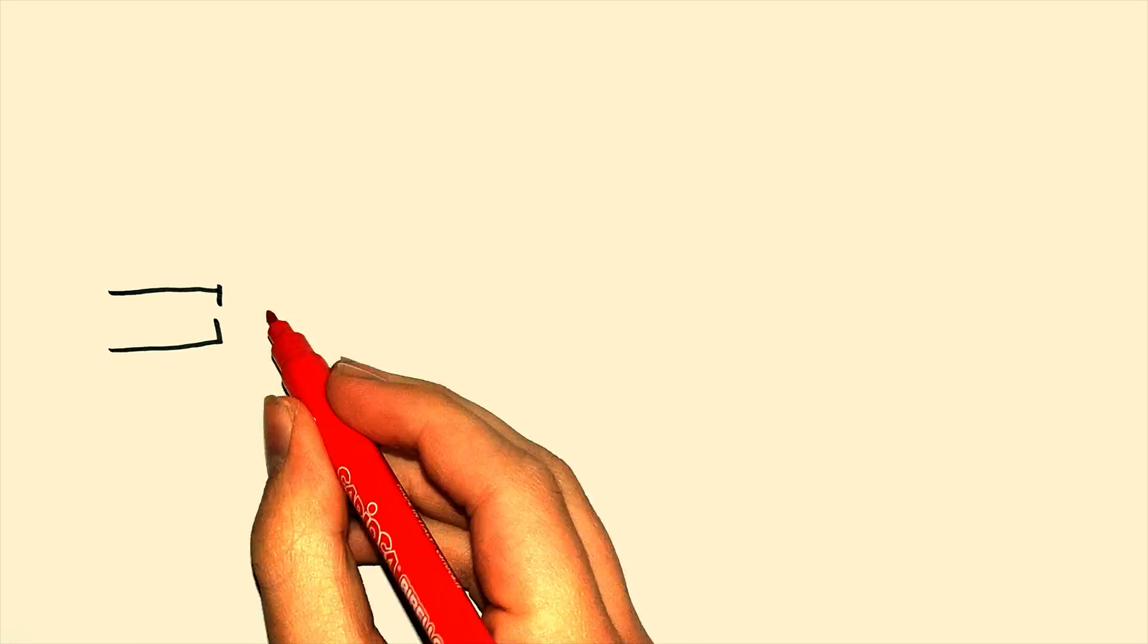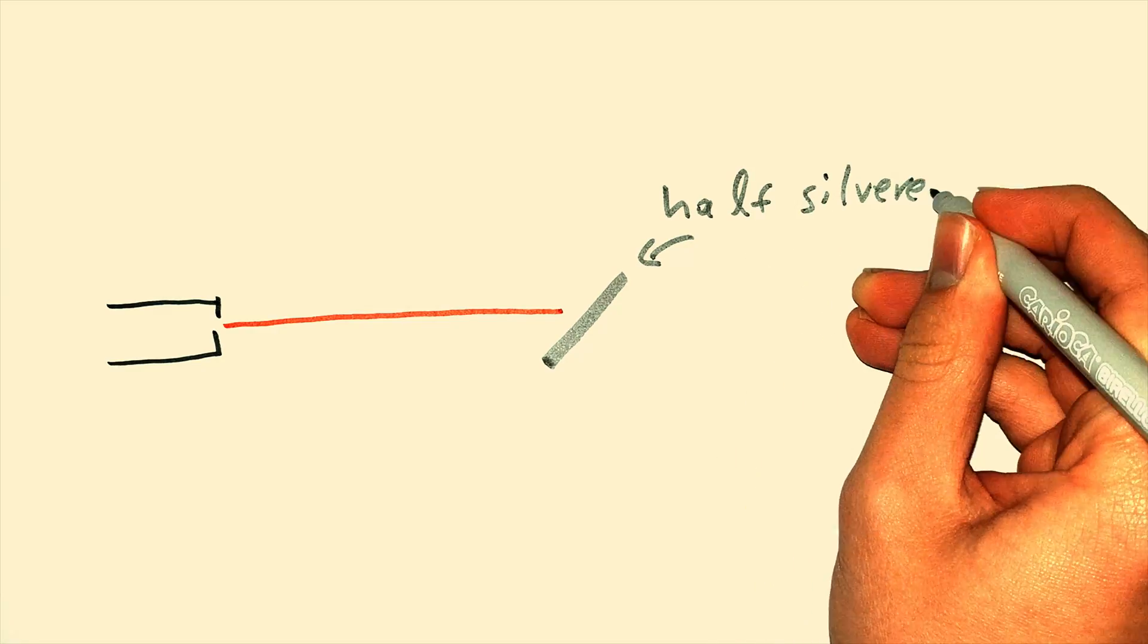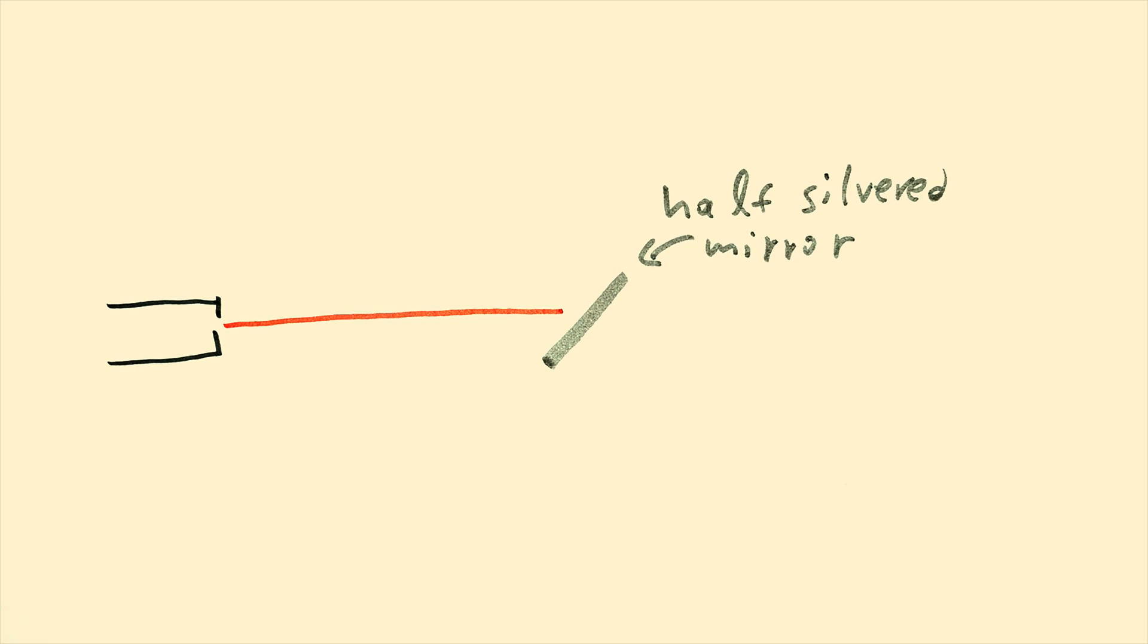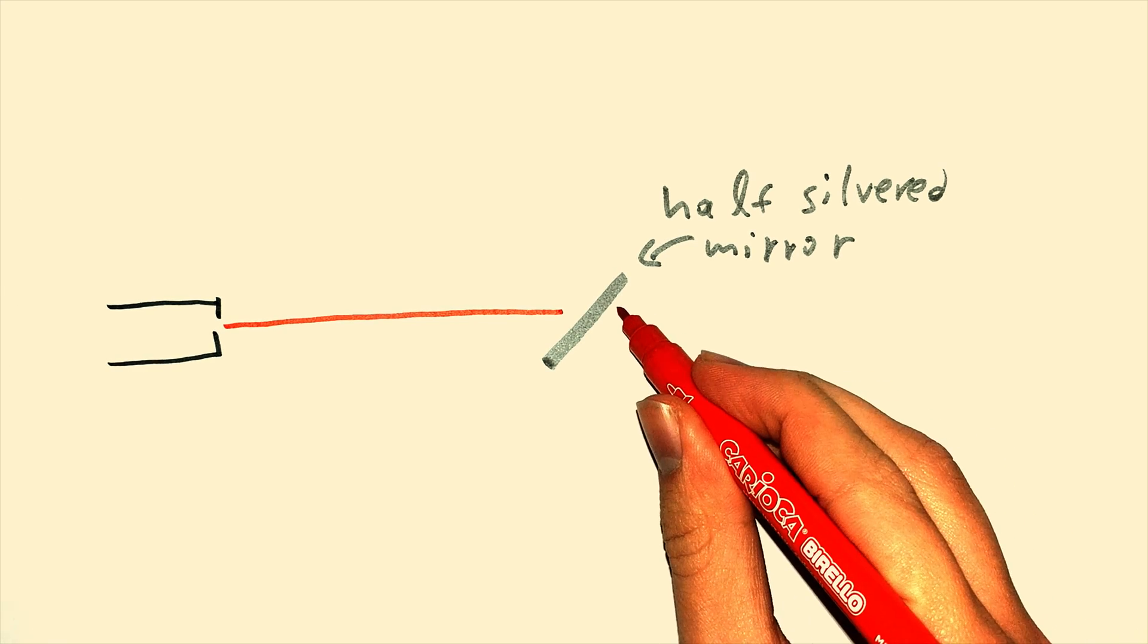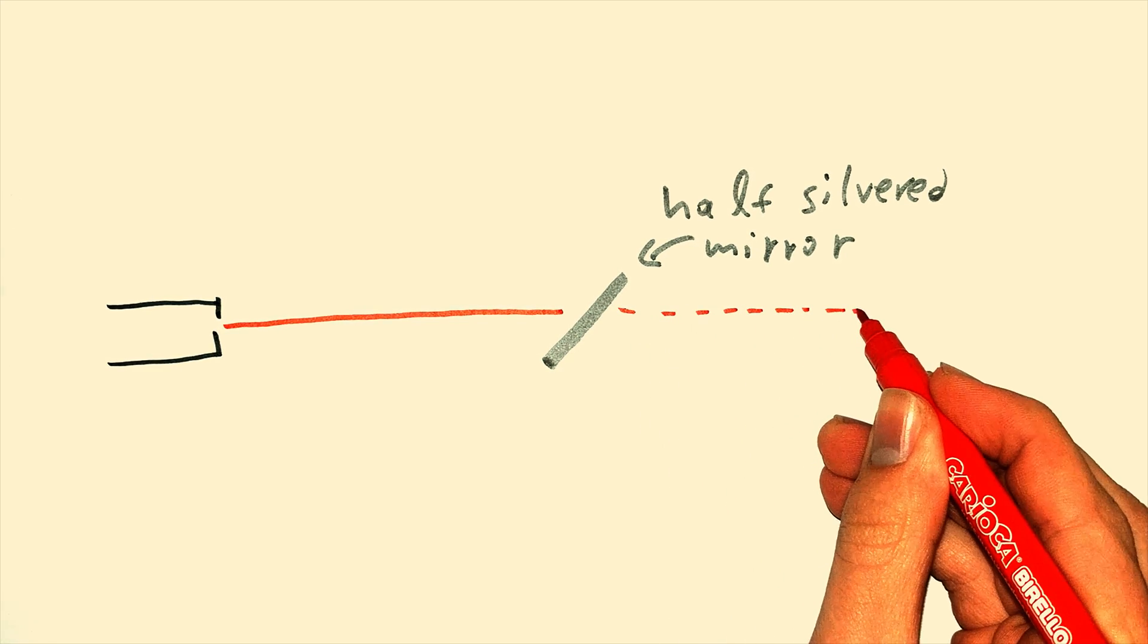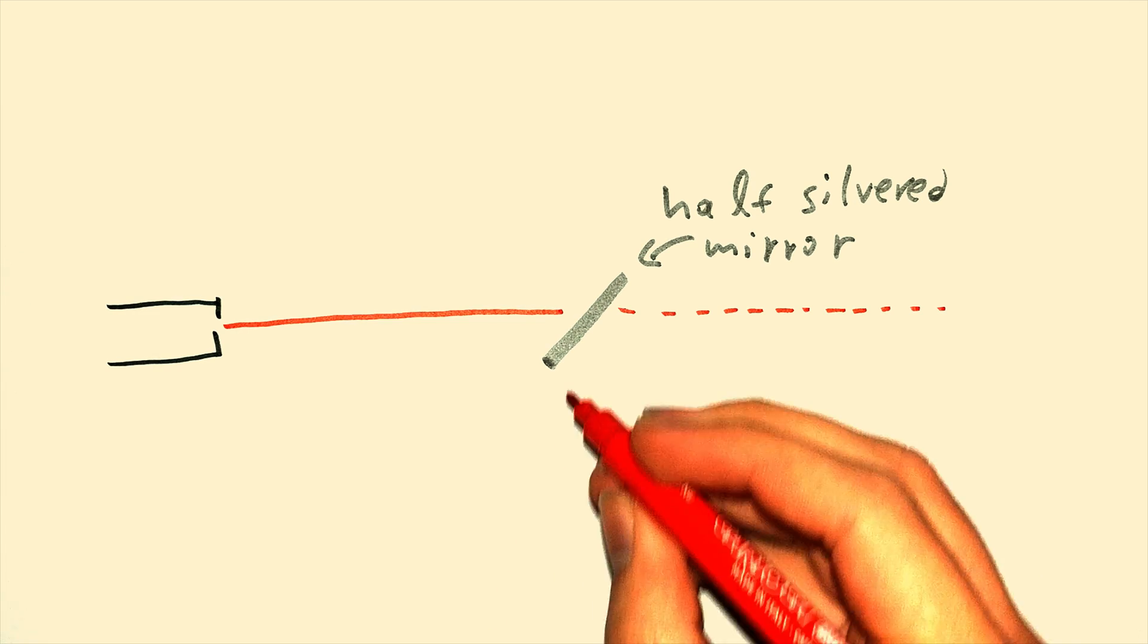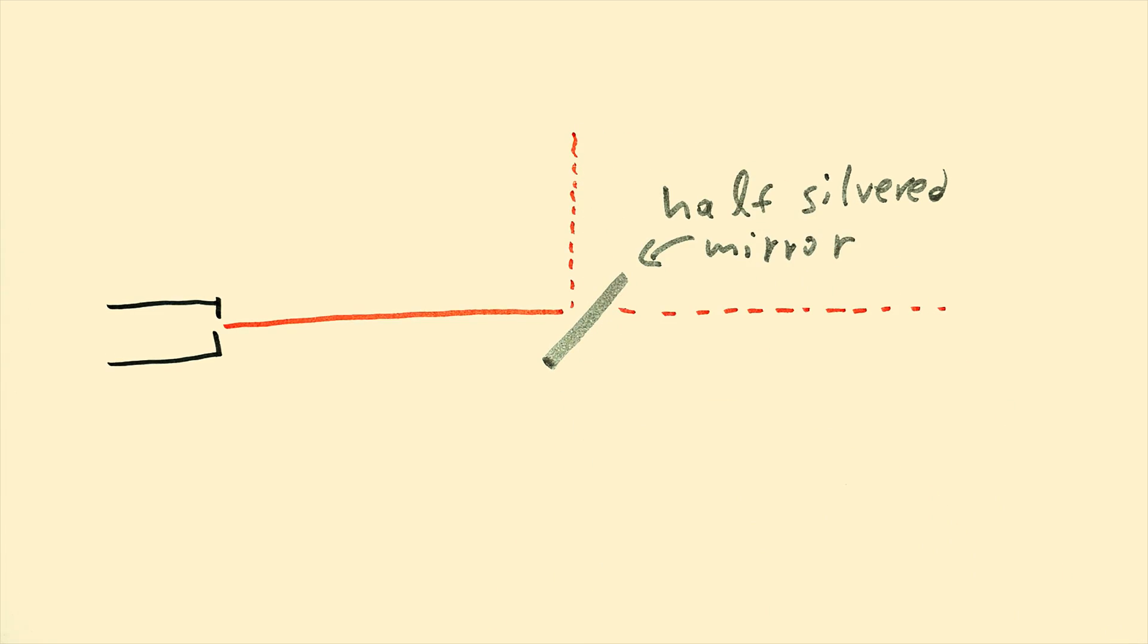A laser shot a beam of light to a half-silvered mirror, which is a kind of mirror that lets part of the light pass through intact, and the other part to get reflected.